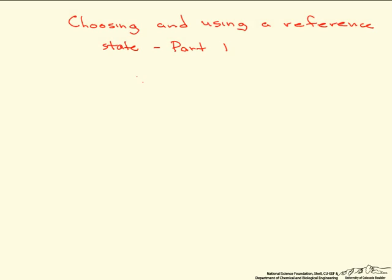This screencast goes over how to choose and use a reference state if you have a system where the reference state isn't already determined by the kind of data that you need to look up. So what we are going to look at is a vapor liquid equilibrium with benzene and toluene.